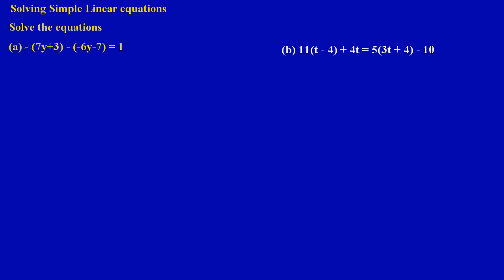It states: there's a negative sign in front of the bracket multiplying 7y plus 3, and that is being subtracted by negative 6 minus 7 in parentheses, and that is equal to 1. Whenever you see a negative sign in front of a bracket, it's as if you're changing the sign on everything inside the bracket — making it the opposite of what is inside.